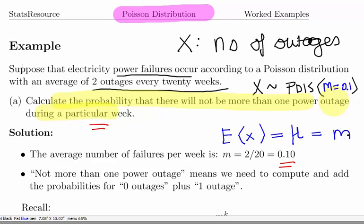Not more than one outage per week means we need to compute the probability of zero outages and one outage. In any given week, what's the probability that there's either zero outages or just one outage?